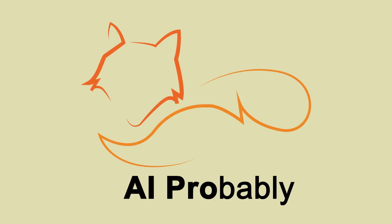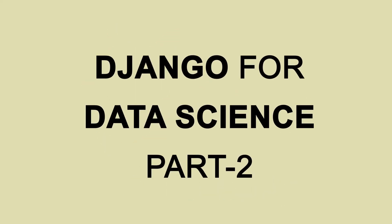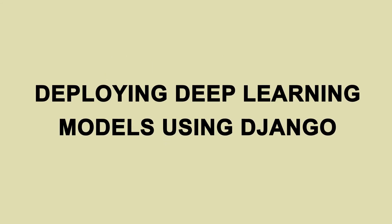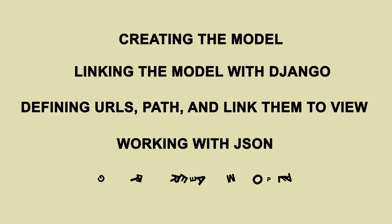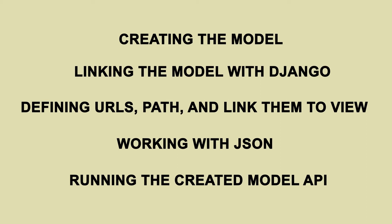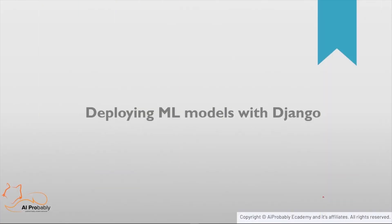Hi guys, namaste! Thanks for tuning into AIProbably. This is Harshad Agrawal, and we are currently in Part 2 of our Django course. In this part, we'll be learning how to deploy machine learning models using Django — covering how to create a model, link it with a Django app, define URL paths and views, work with JSON files, run the Django app, and finally use the created API in a web app using Streamlit.